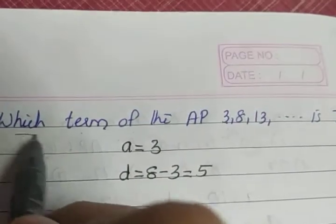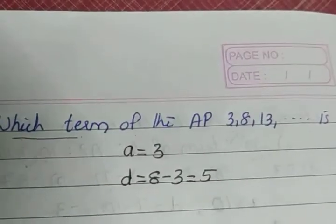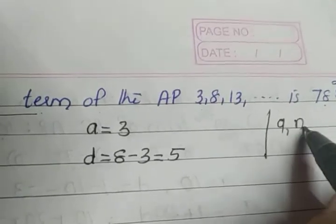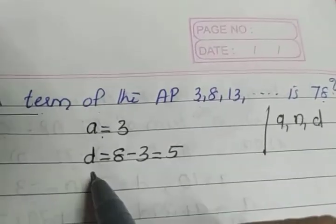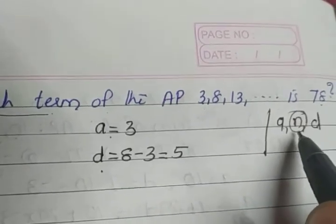Again, the question is which term? There are only three unknowns in an AP. Which are the unknowns in an AP? a, n, and d, isn't it? a is given, d is given, so the value which is not given is n.